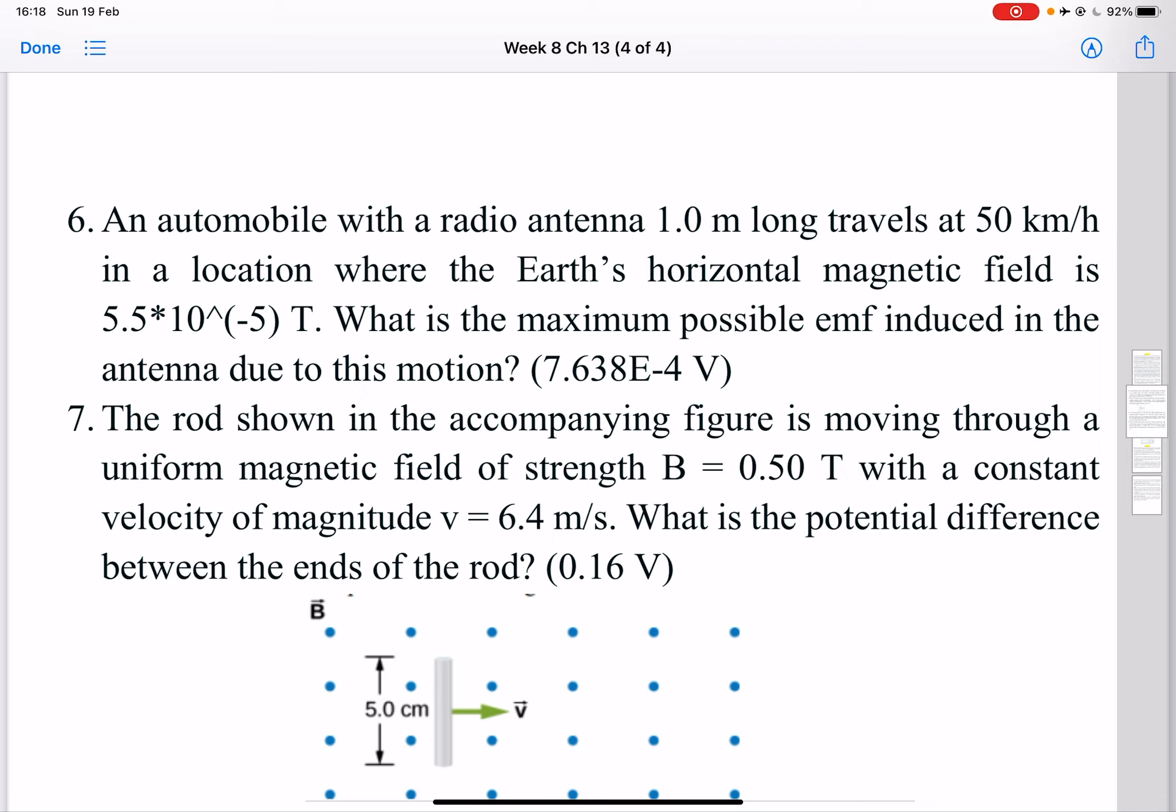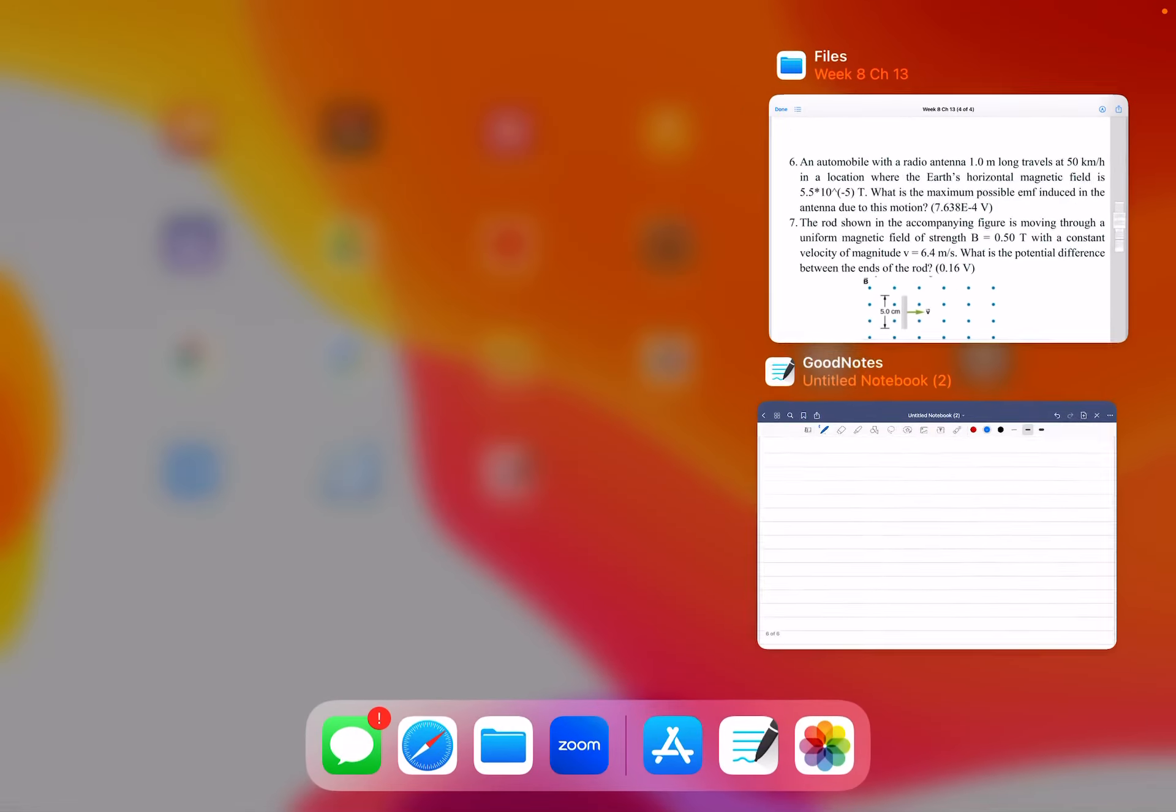Basically using the same formula. So problem 6, the length of the antenna is given, the speed is also given that it's traveling, and you have to find induced emf in the antenna.